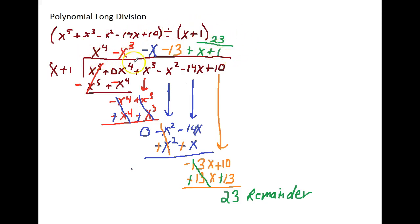So everything up here, just like regular long division, is your answer. I have x to the 4th minus x to the 3rd minus x to the 1st minus 13 plus 23 over x plus 1 is your remainder. Alright?